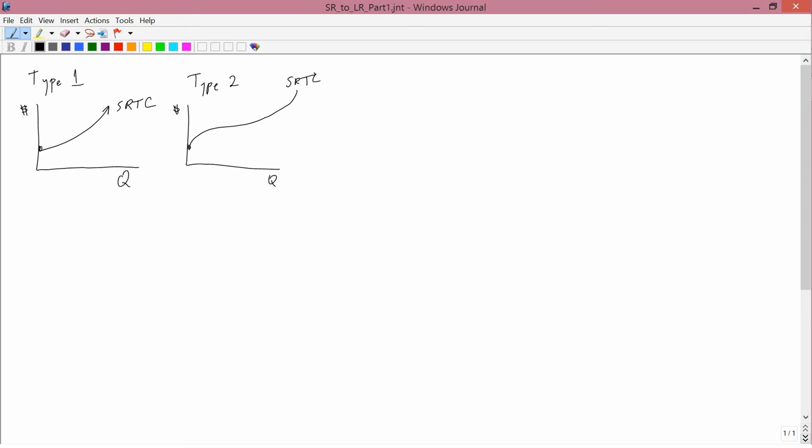Let's remember how we got this short run total cost curve. We had isoquants and we had an initial amount of fertilizer F0.